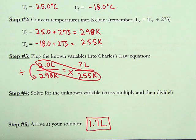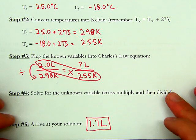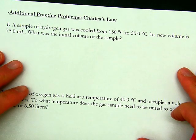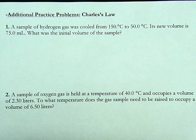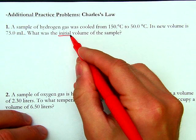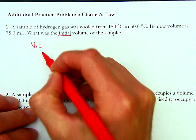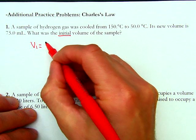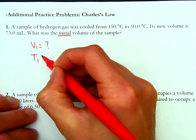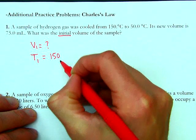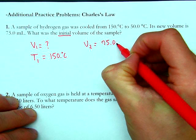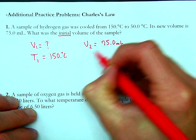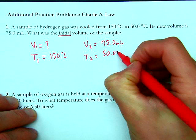Now I'm going to solve a couple more problems in the same way, solving for different variables. In that last case we solved for the ending volume. This next problem, we have two temperatures and the new volume is actually given — we need to find the initial volume. So V1 is unknown.